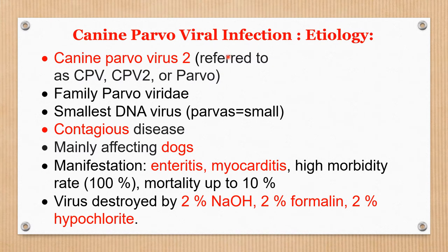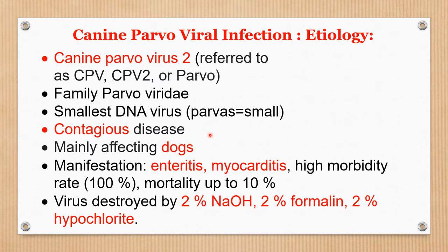First, we will see the etiology of Canine Parvovirus Infection. Canine Parvovirus 2 is the main cause, referred to in short as CPV, CPV2, or simply Parvo. The virus belongs to family Parvoviridae. This is the smallest virus and a DNA virus. The word Parvo means small. Parvo is a highly contagious disease.